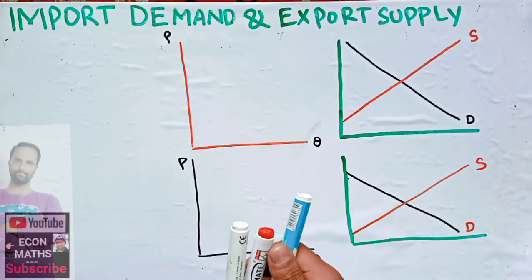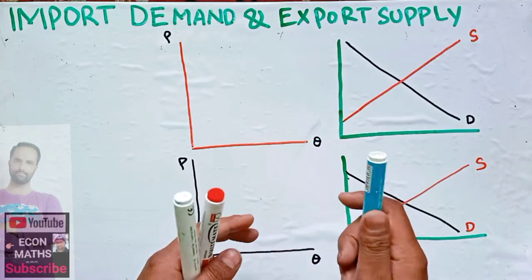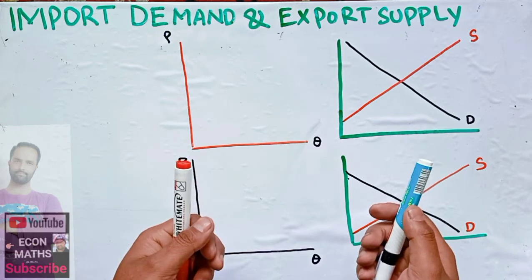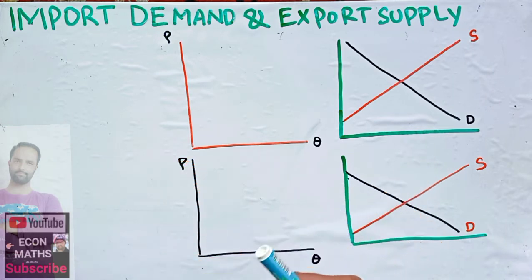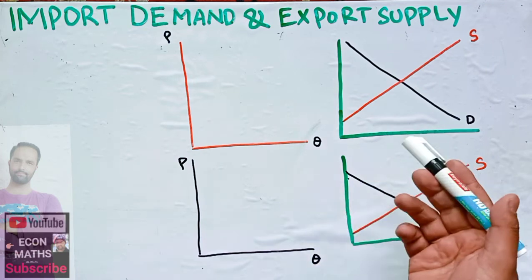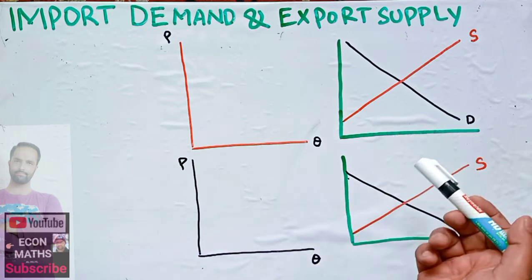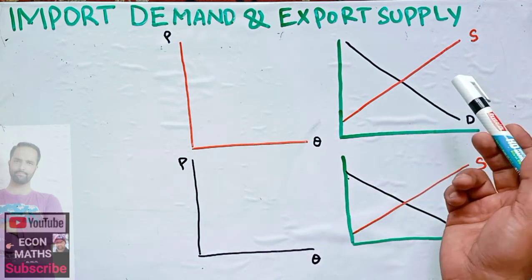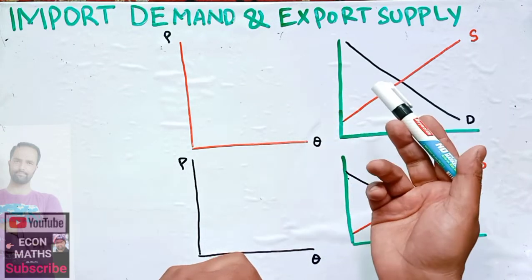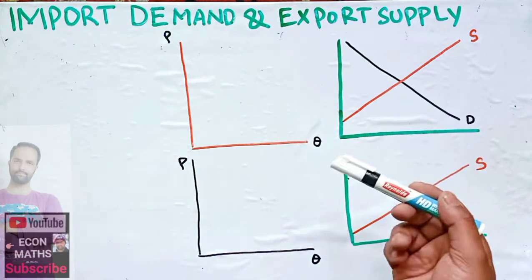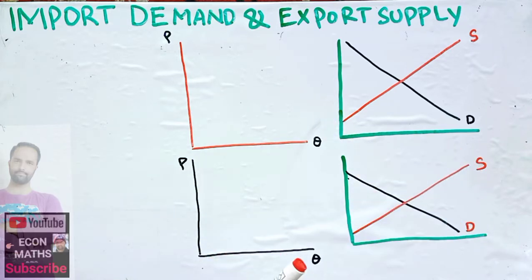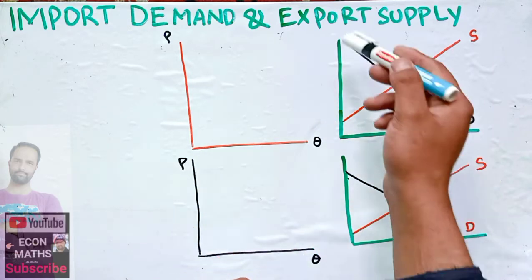In this video we will try to derive import demand and export supply curves. In international trade equilibrium we need to find the equilibrium between import demand and export supply. For this we need to first derive the import demand and export supply curves.